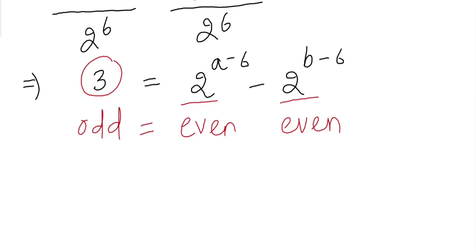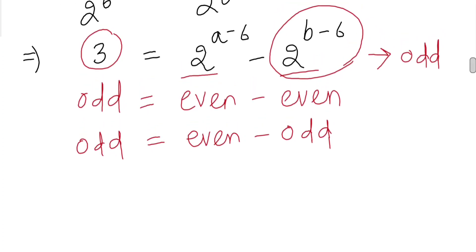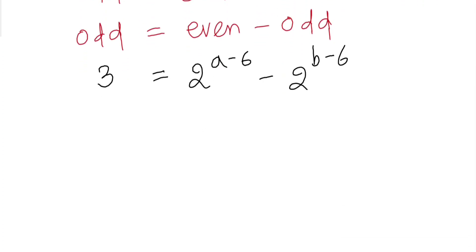Odd is never equal to even minus even. So here in order to get odd equals even minus, this must be odd. When 2 to the power something is odd, the only case is that it must be 0. So 3 equals 2^(a-6) and this must be odd, which means b minus 6 equals 0.